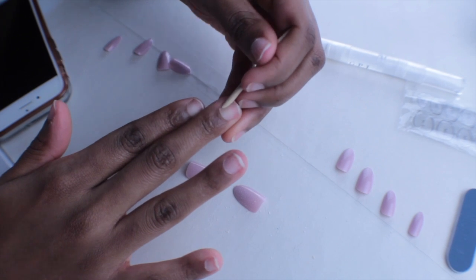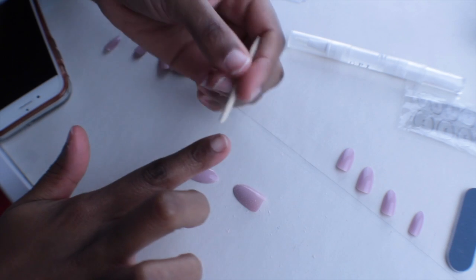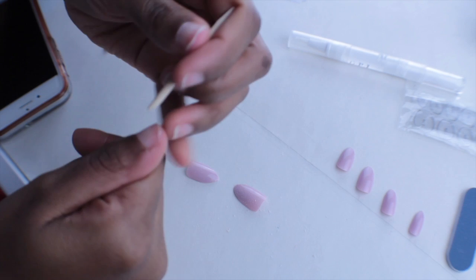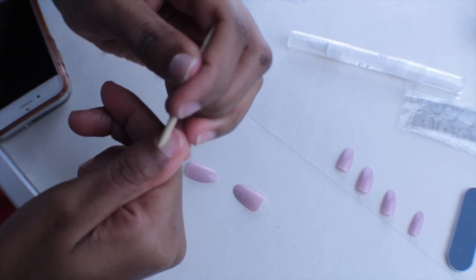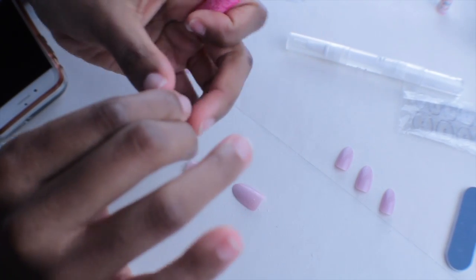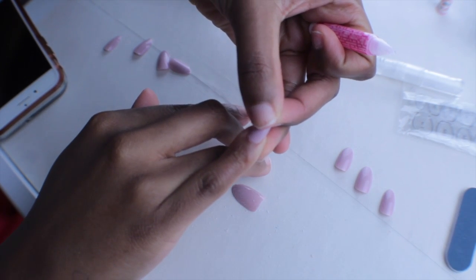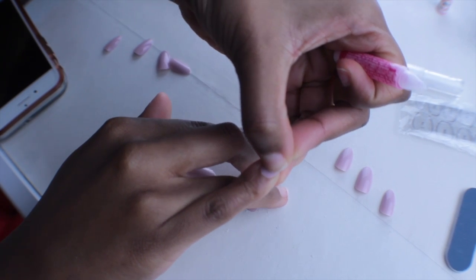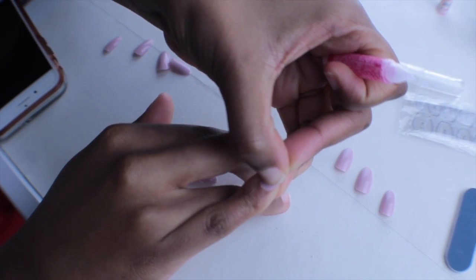That way the nail can fit nice and snug. With this you want to be careful. Don't be really harsh on your cuticles because you will potentially cut yourself and make yourself bleed, so that's not cute. Now I'm showing you in slow-mo before I speed it up. I'm taking the glue that also comes in the pack that I bought and I'm gluing down the nail.